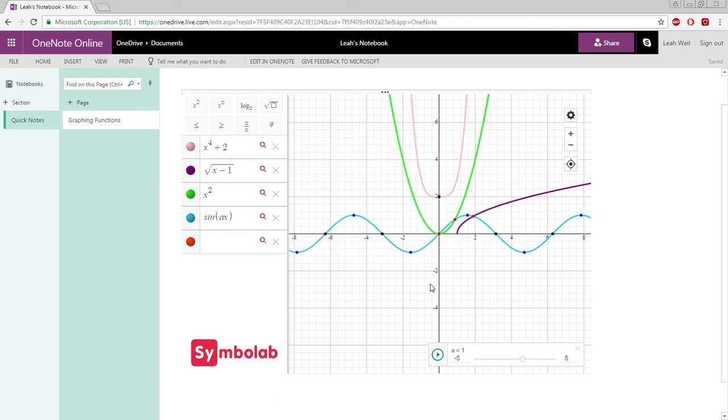For functions with parameters, like Sine of Ax in this case, there is a parameter slider on the bottom right-hand corner. By clicking Play, you can see what the function looks like as A changes values.